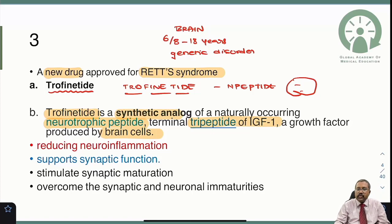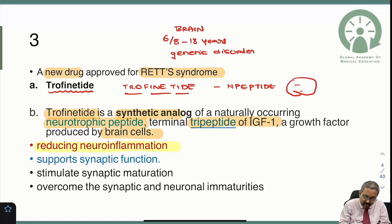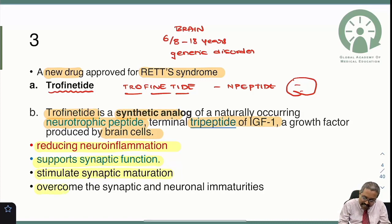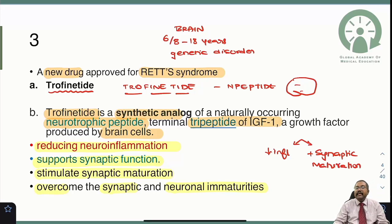Trofinetide works by decreasing inflammatory reactions — especially neuroinflammation — and by supporting synaptic function. It stimulates synaptic maturation, which helps overcome synaptic and neuronal immaturity. So basically it does two things: it reduces inflammation, and it stimulates synaptic maturation. The new drug to remember is trofinetide.